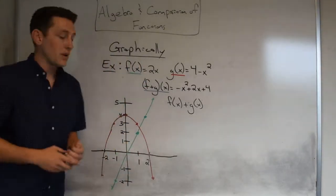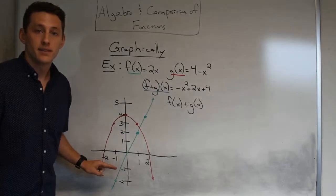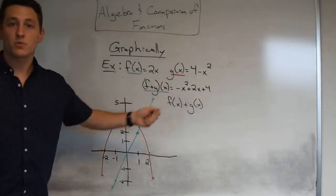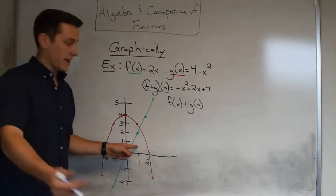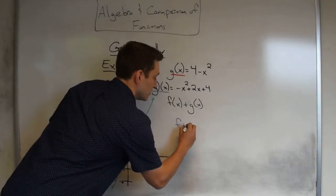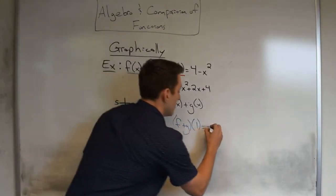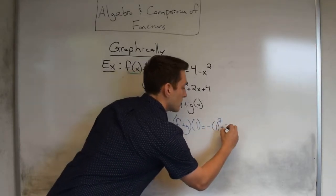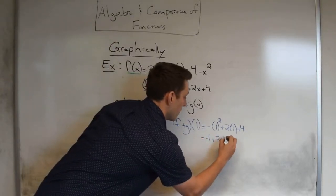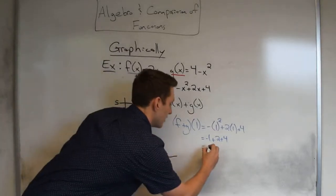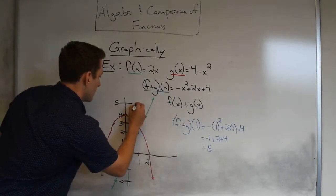Turning to the graph — I've drawn f(x) in green and g(x) in red. What does (f + g)(x) look like? Let's take an example at x = 1. Plugging into our combined function: (f + g)(1) = negative (1 squared) + 2(1) + 4, which is negative 1 plus 2 plus 4, giving us 5. So at x = 1, the y-value is 5, shown as a blue dot.